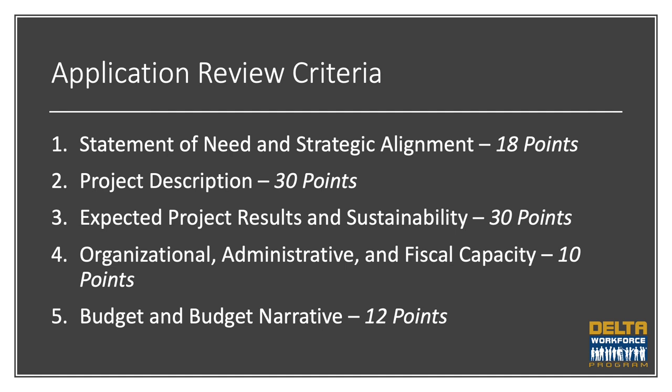For the WORK initiative, the DOL has instituted a review procedure assessing the technical merit of the proposal and providing for an objective review of submitted applications. The Application Review Criterion is comprised of five sections totaling 100 possible points: Statement of Need and Strategic Alignment, Project Description, Expected Project Results and Sustainability, Organizational Administrative and Fiscal Capacity, and Budget and Budget Narrative. I'll describe each section and identify the information needed to realize the highest possible score.